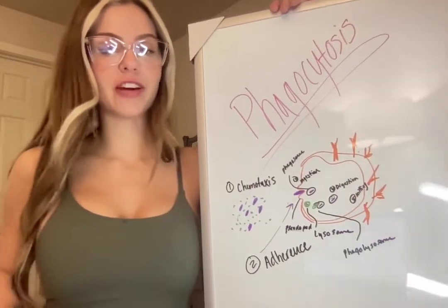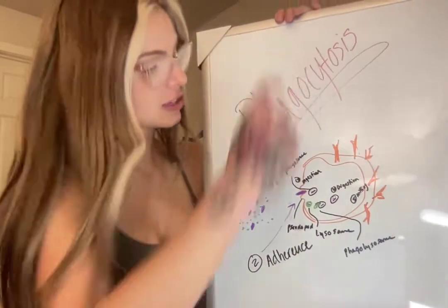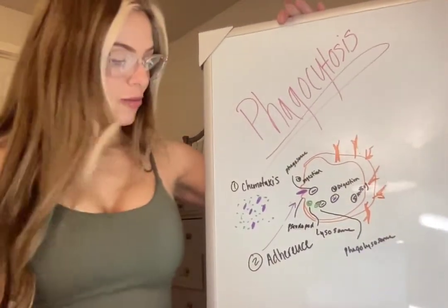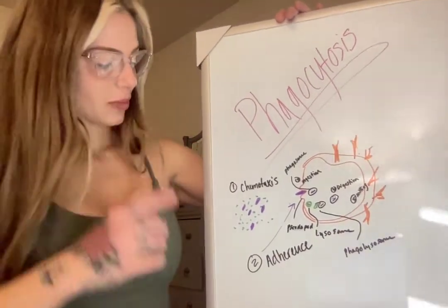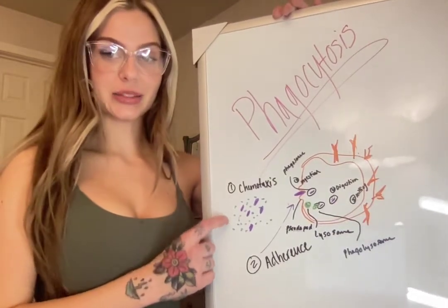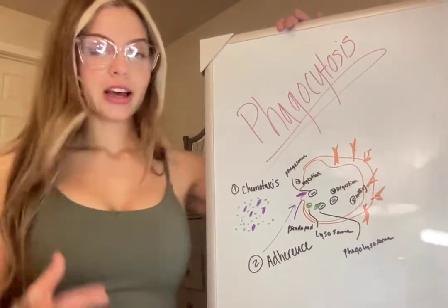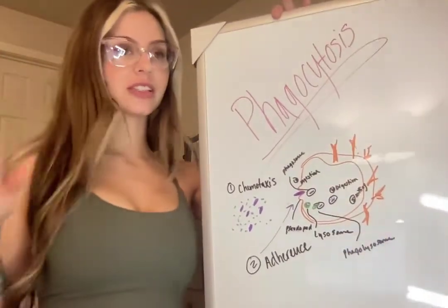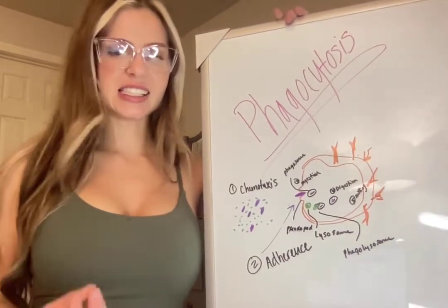Let's talk about one of my favorite processes, which is phagocytosis performed by our phagocyte. When a microbe enters the body — this is our microbe in purple right here — it came into the body and it's releasing these chemicals, which are our little blue dots, into the extracellular fluid, and the phagocyte is going to sense this chemical.